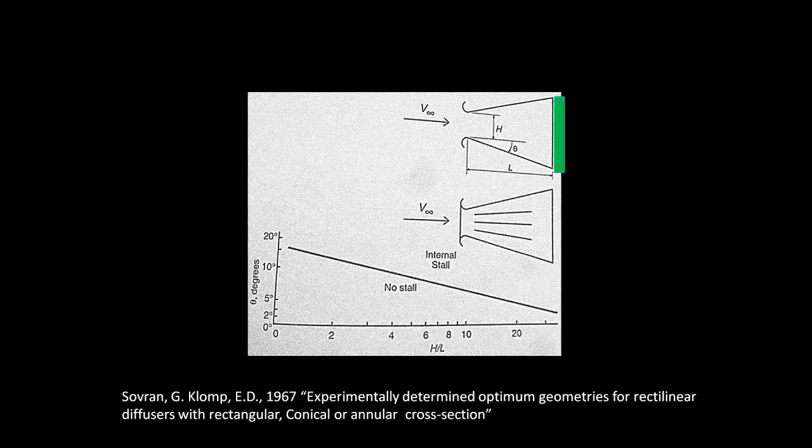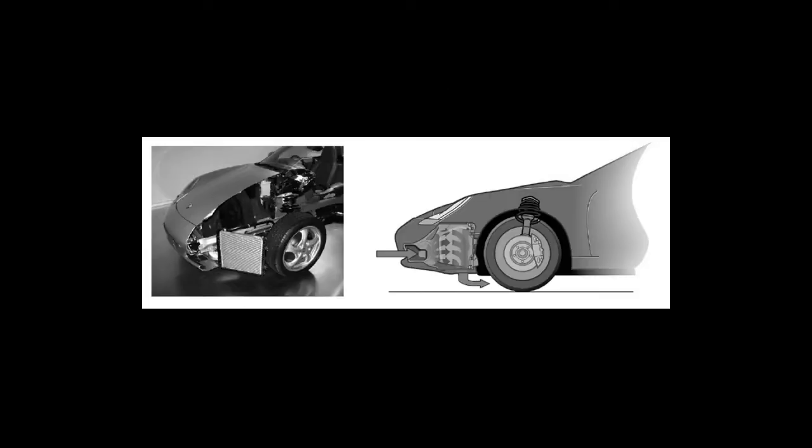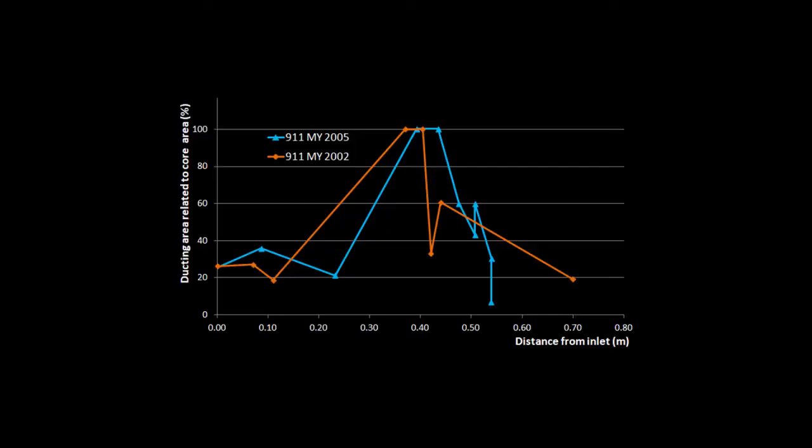We have a radiator at the end of ours, which puts a backward pressure on the air flowing into the duct, allowing us to run even more angle. A good example of this is a 2005 Porsche 911. It has two radiators, each with a core area of 0.12 meters squared, situated just in front of each of the front wheels. When we look at the ducting area to the distance from the inlet, we can see that they increase the ducting area from 20 to 100% of the radiator core in under 200 mil. So fairly aggressive angles can be used if the system is set up for it.